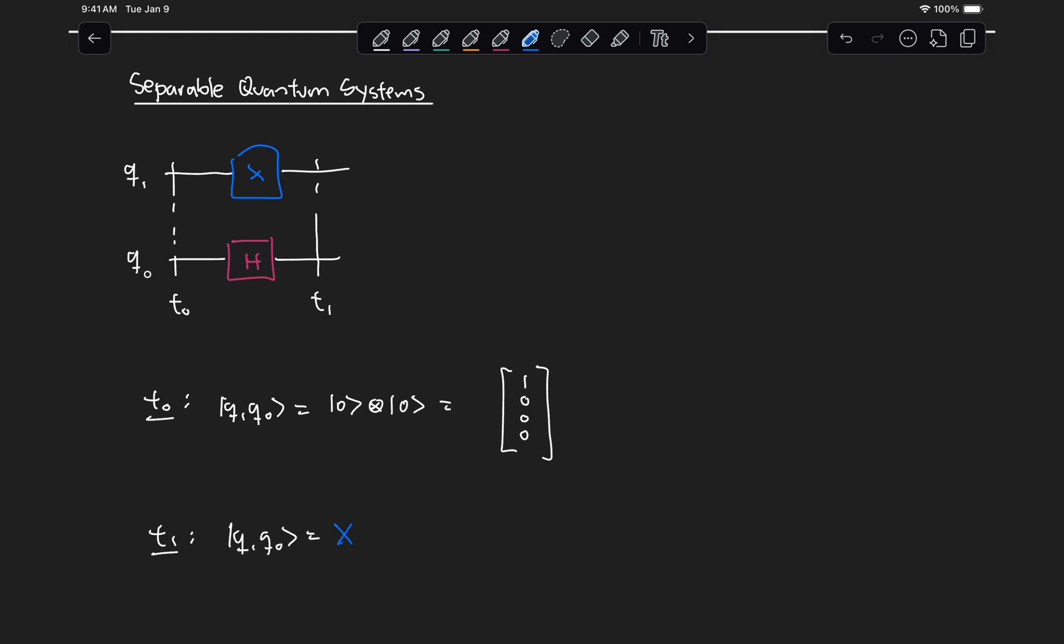An X gate acting on the q1 qubit and a Hadamard gate acting on the q0 qubit, and we can do one of two things. We can individually apply the gate to each of these vectors and then take the tensor product.